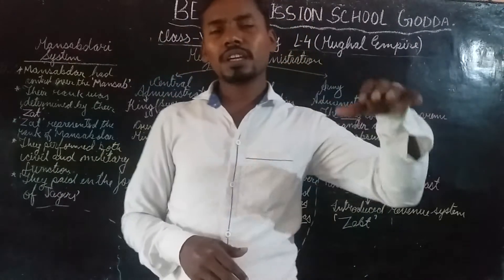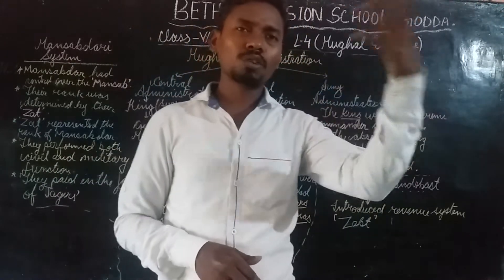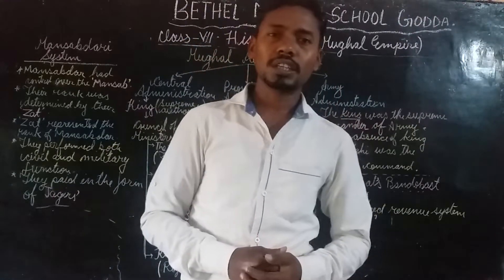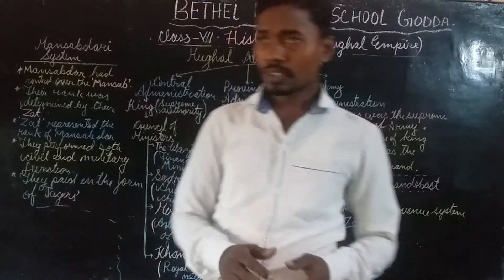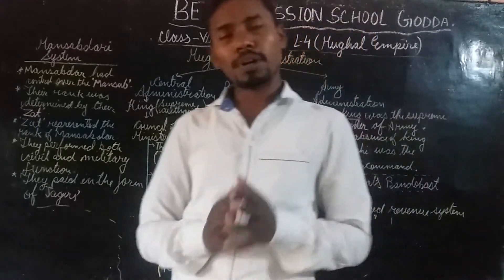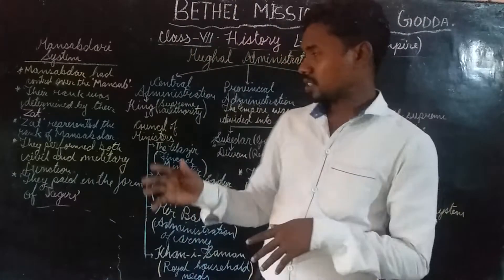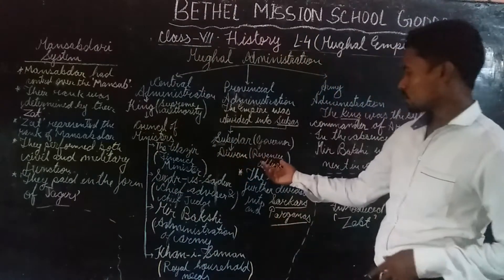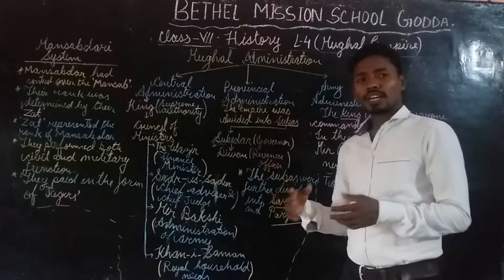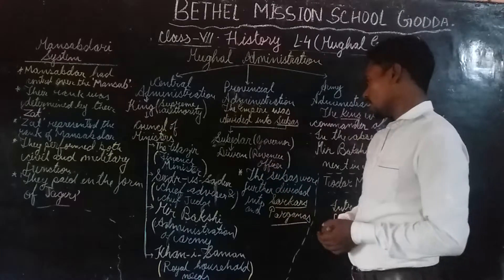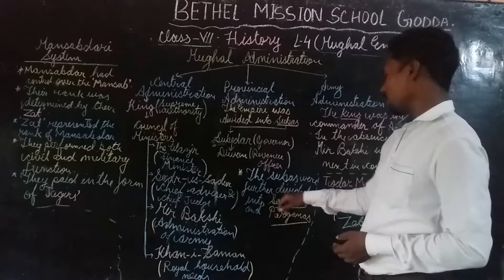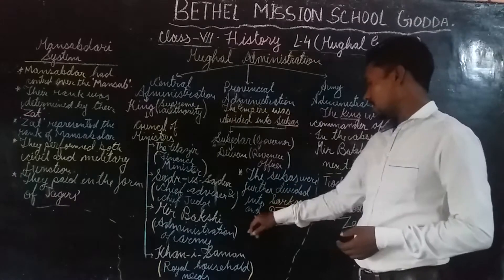Not everybody has to pay taxes — there is a lower limit, so people who don't earn enough need not pay taxes. But those whose income is above a certain limit have to pay taxes. Taxation was a very important system to run the whole empire. The Diwan was the revenue officer who used to collect taxes.